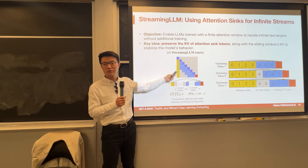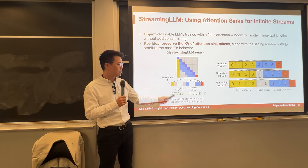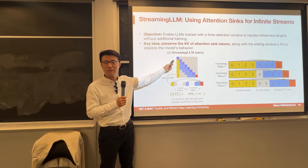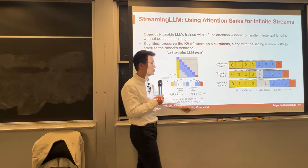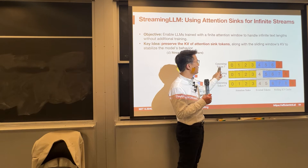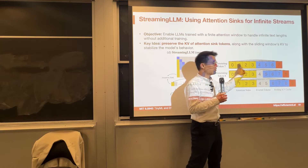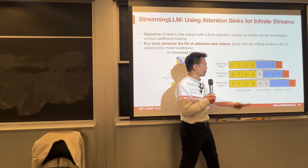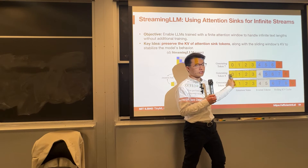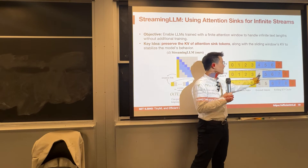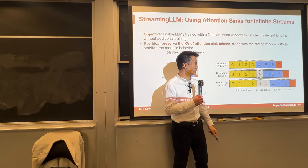Therefore, our solution is just to always keep the first tokens — always keep the attention sinks — and then apply a rolling window for the attention later. So we are generating token seven, and assuming the KV cache size is eight, when you generate token eight we keep the attention sinks — four in this case — skip four, and then use a rolling window manner for the remaining tokens.